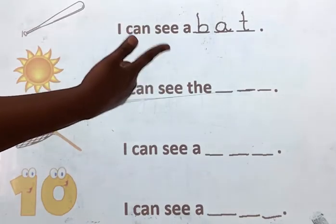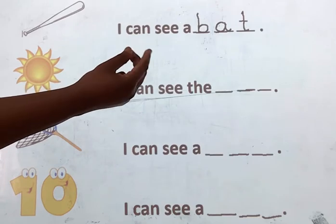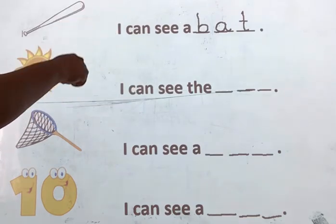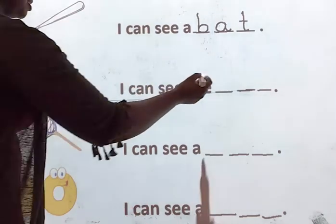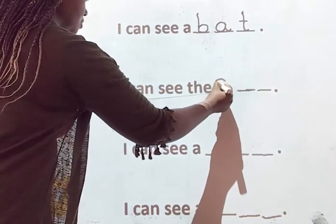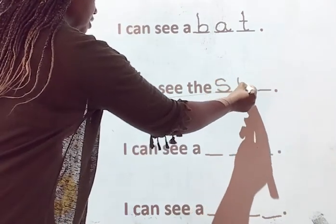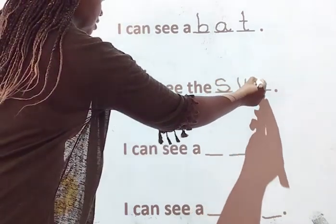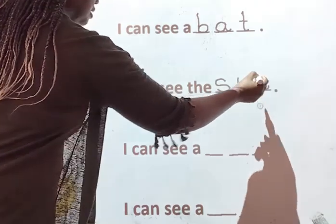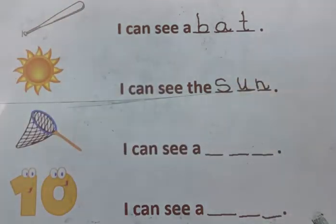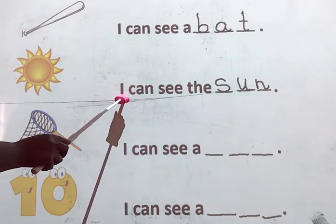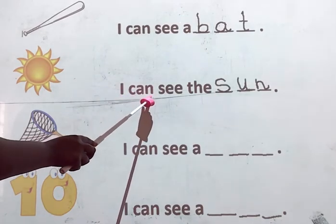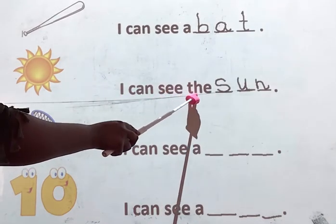Sun: S, A, N. Always say the sounds on your fingers before writing it. So let's write the sounds in sun — let's say the sound, go: S, A, N — sun. Very good. Now let's read the sentence: I, can, see, the, sun. Good job. Can you see the sun? Yes.